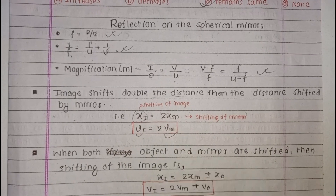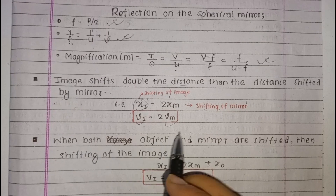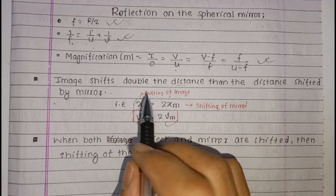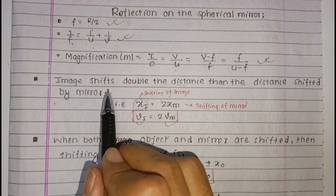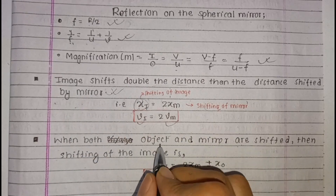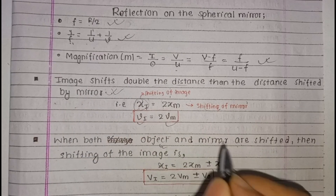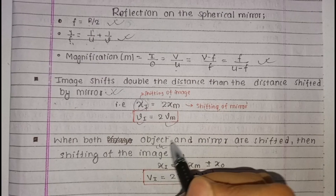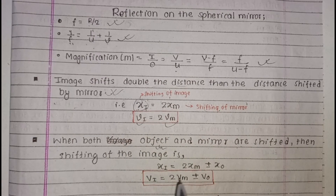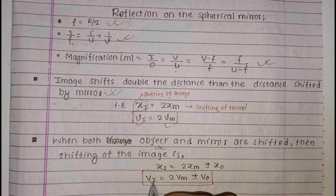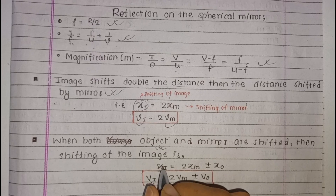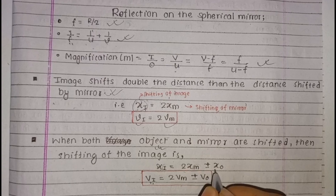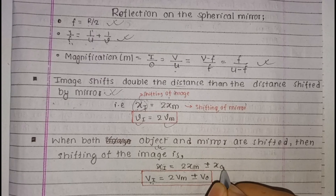When both object and mirror are shifted, the shifting of the image equals 2 times the shifting of the mirror plus the shifting of the object. The velocity of the image is equal to 2 times the velocity of the mirror plus the velocity of the object.